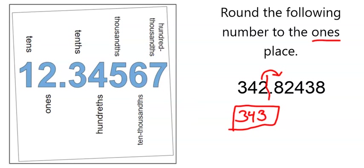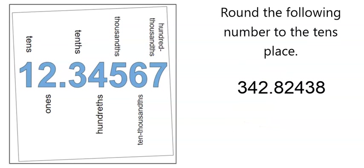Now we have one final example of something that might throw you for a loop a little bit. What if we're supposed to round this number, and it's the same number that we've used before. What if we're now supposed to round this to the tens place?